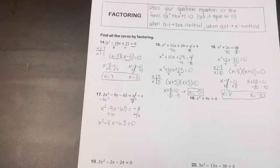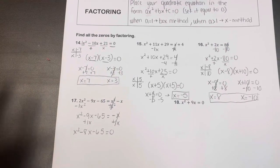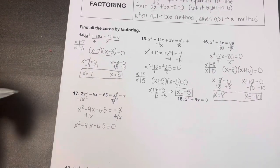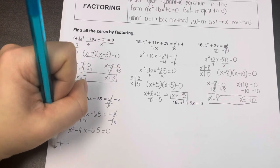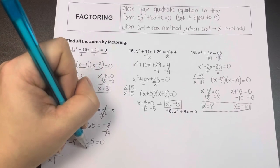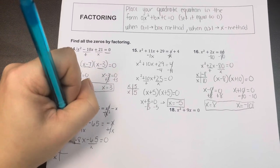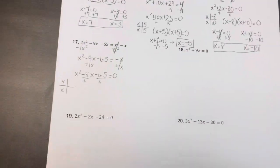So now the coefficient of x squared is 1. So I'm going to use the box method. Split up your x squared evenly. Two numbers when multiplied together equal negative 65, but when added together equal negative 8.